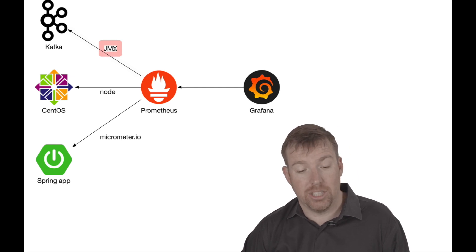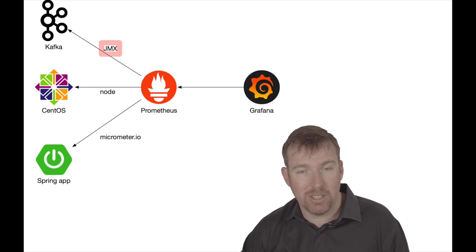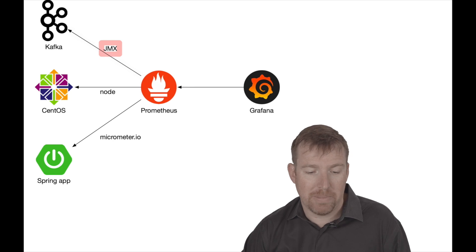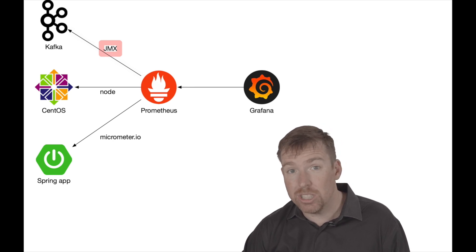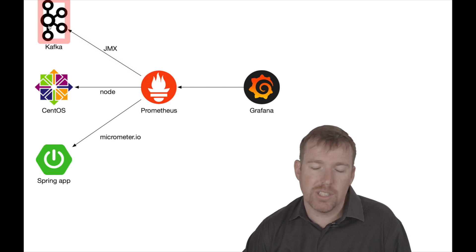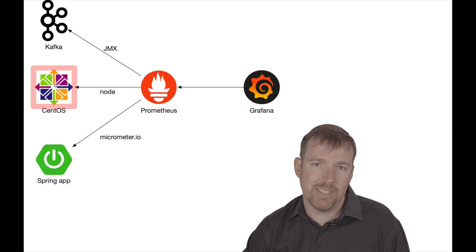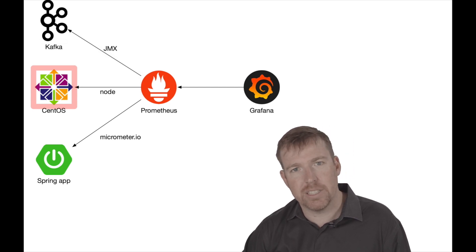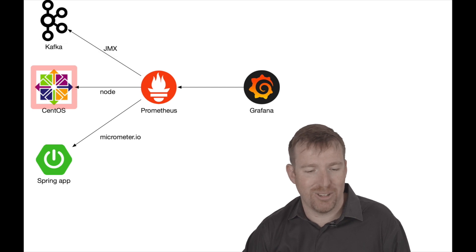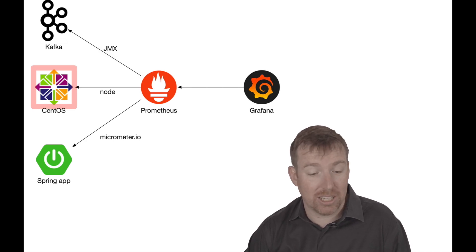Kafka is a JVM application, so we are using JMX — the Java Management Extensions — to collect metrics from Kafka and Kafka Connect. There's something called the JMX exporter; that's how that data is getting there. If you're going to run Kafka, you also need to keep an eye on your disk utilization. If you run out of disk space, you're kind of screwed. You could be blissfully unaware that you're screaming towards disaster because you're not keeping an eye on disk usage.